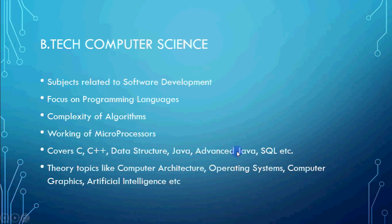For that, we are learning different programming languages — it depends on different universities. In major universities, you start from C, then move to C++ as the first object-oriented language. But if you are doing NSIT or other universities, you may start Java as your object-oriented programming language. Majorly, the focus is on how programming works, and within that, the most important thing is the complexity of algorithms — in time and space, how can we make execution fast, how can we get work done in lesser time and fewer calculations and comparisons. That major thing you learn in BTECH Computer Science.